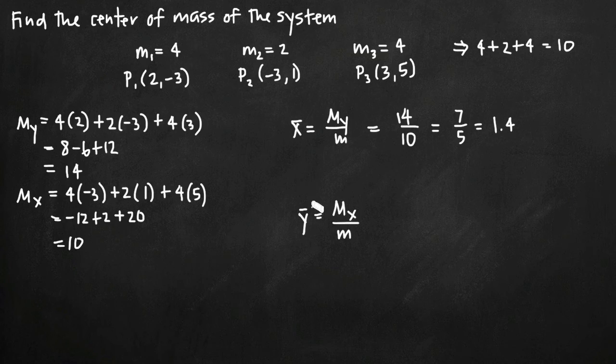Now to find the y value for the coordinate point for the center of mass, we're going to take m_x, the moment we found before, and divide that by total mass. So our moment here, m_x, is 10. And we're going to divide that by the total mass, which we've already found is 10. So it's going to be the same as dividing by the total mass up here. In this case, that's equal to 1.